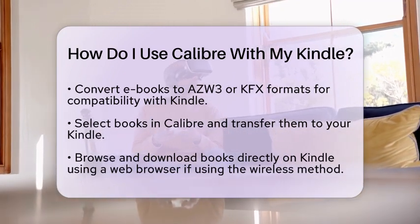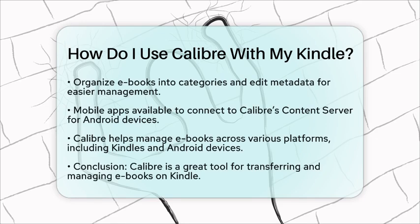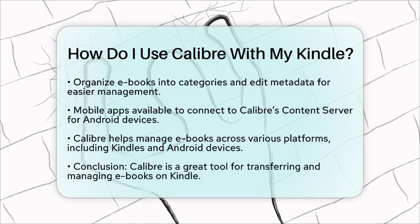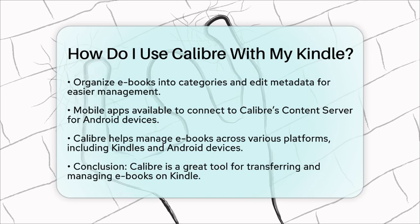While Calibre is primarily a desktop application, there are mobile apps that can connect to Calibre's content server. This allows you to browse and download books directly to your Android devices or other supported e-readers. Calibre is particularly useful for managing ebooks across multiple platforms, including Android devices and Kindles, providing a centralized way to keep your library organized and ensuring your ebooks are always accessible in the right format for your devices.